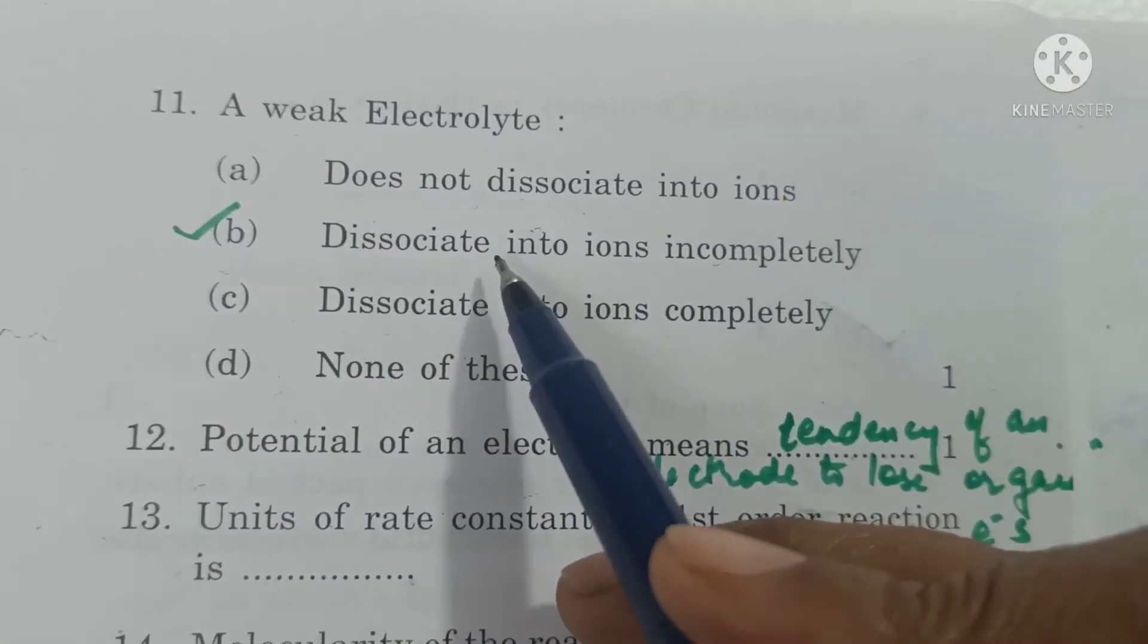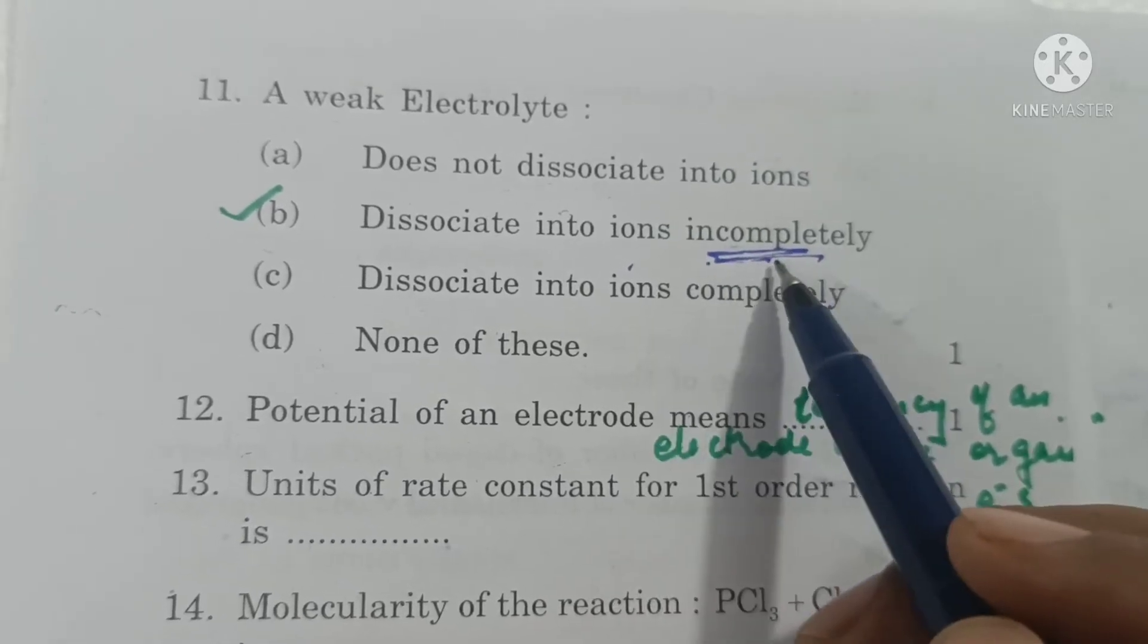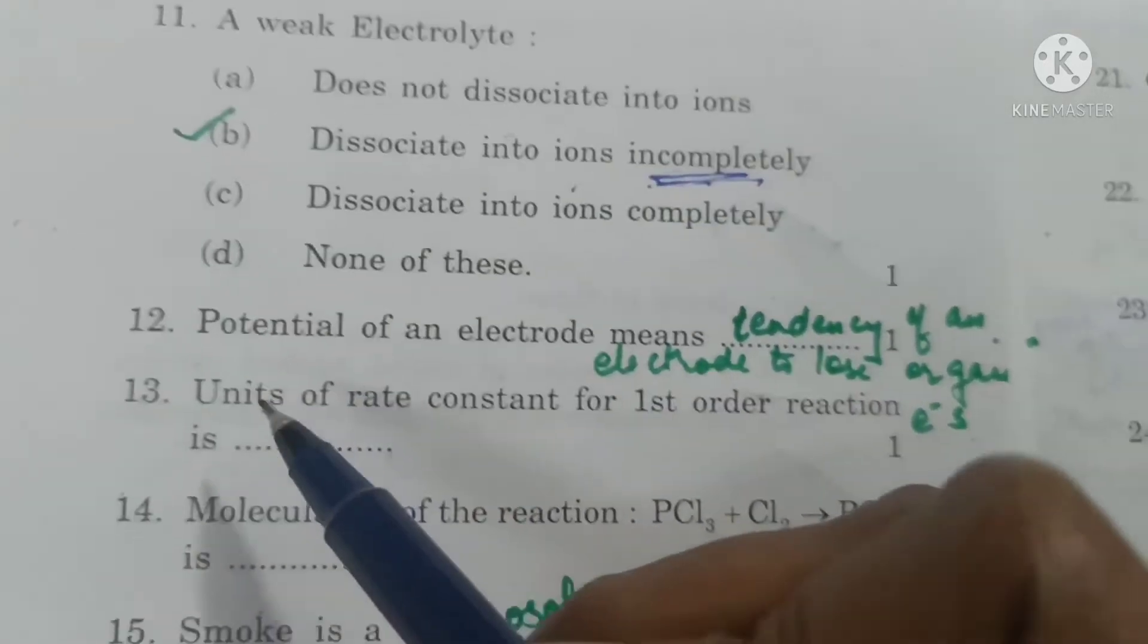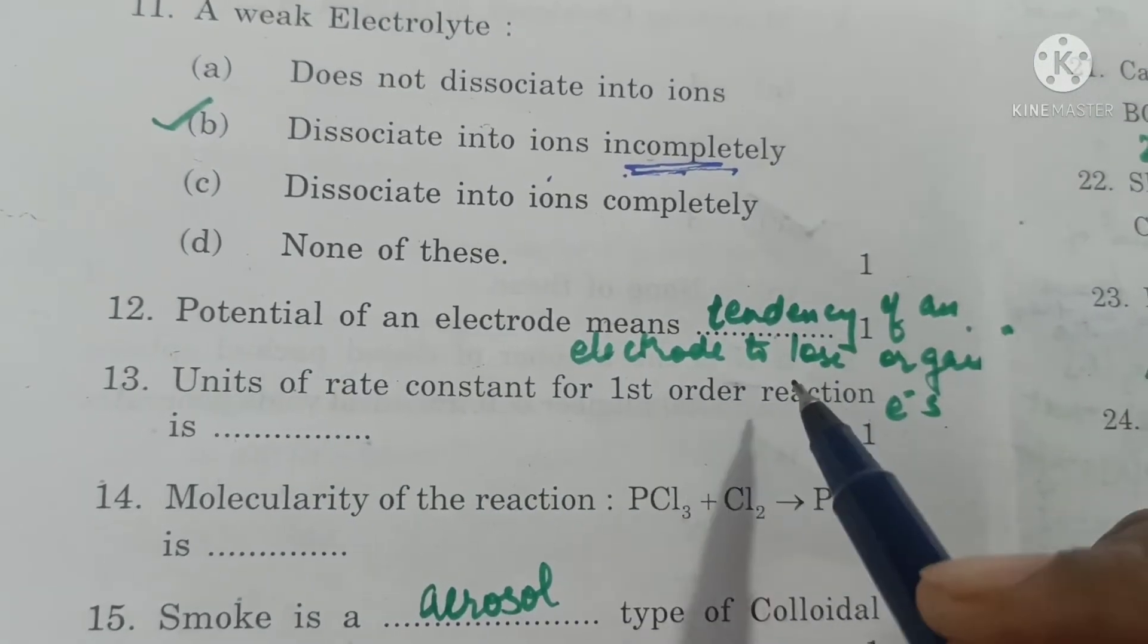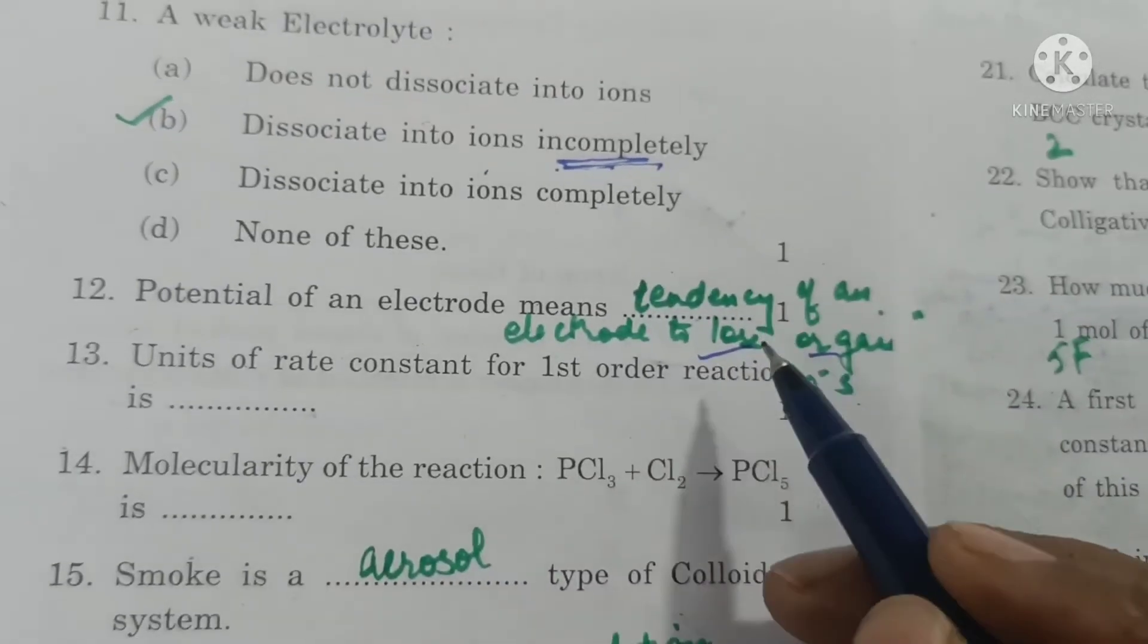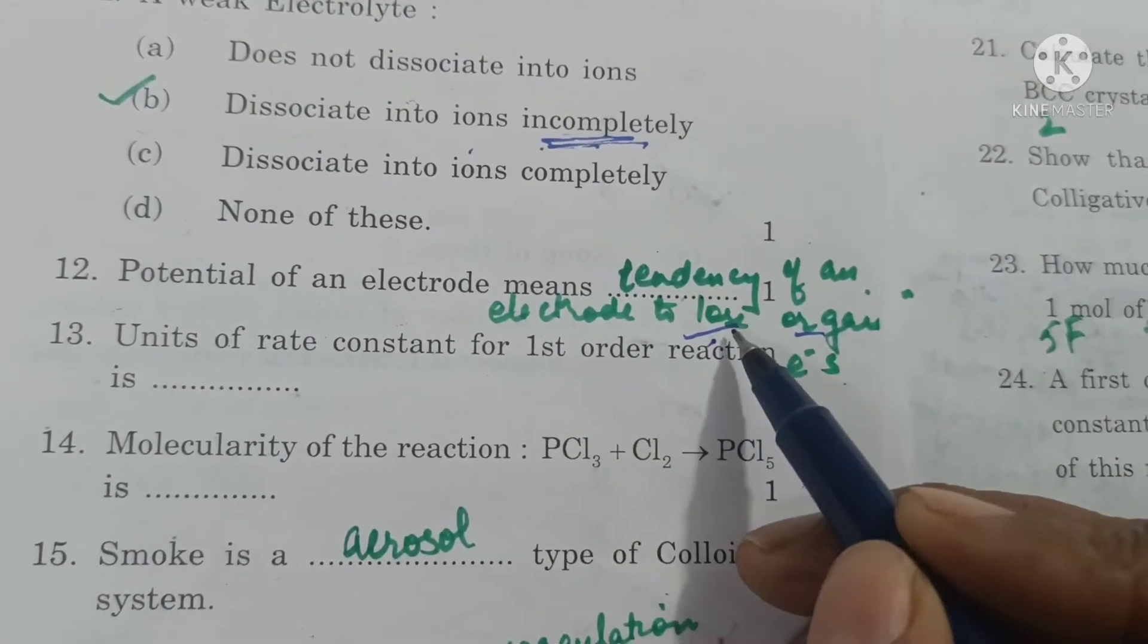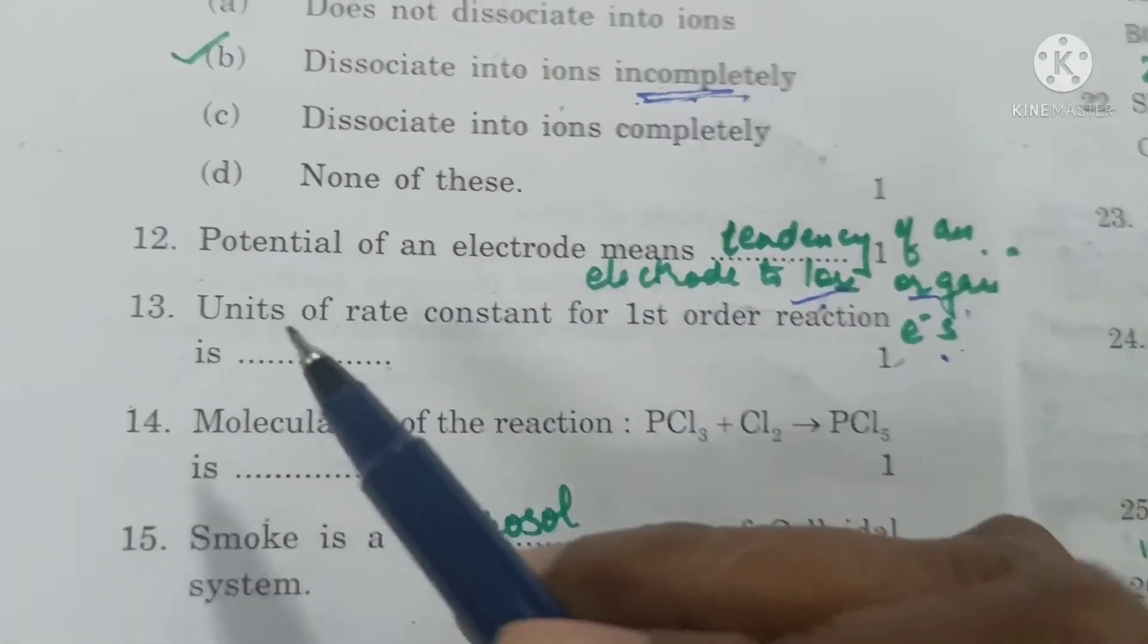A weak electrolyte dissociates into ions incompletely. After some time an equilibrium is set. Potential of an electrode means tendency of electrode to lose or gain electrons. The tendency to lose electrons is called oxidation potential and tendency to gain electrons is called reduction potential.